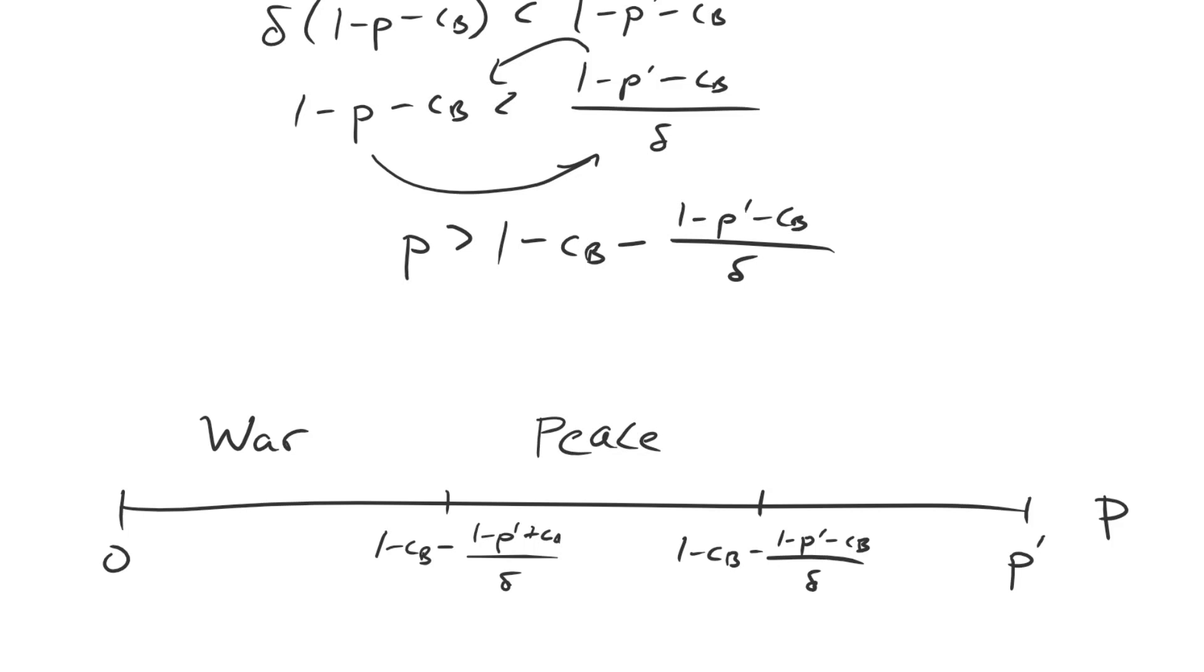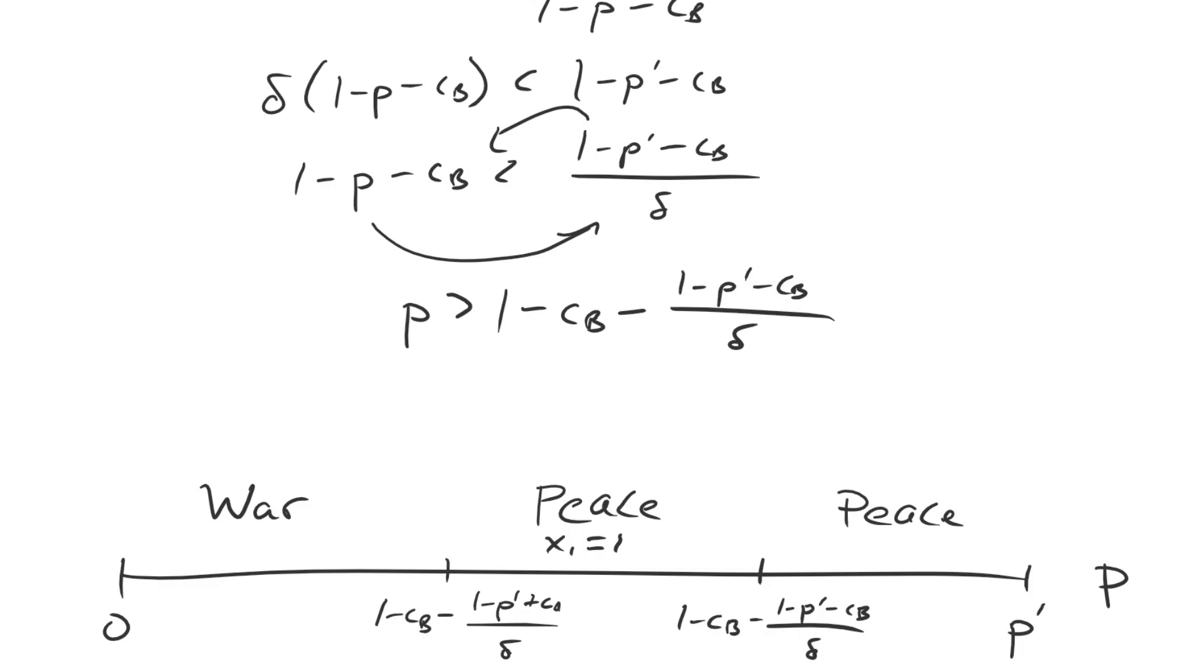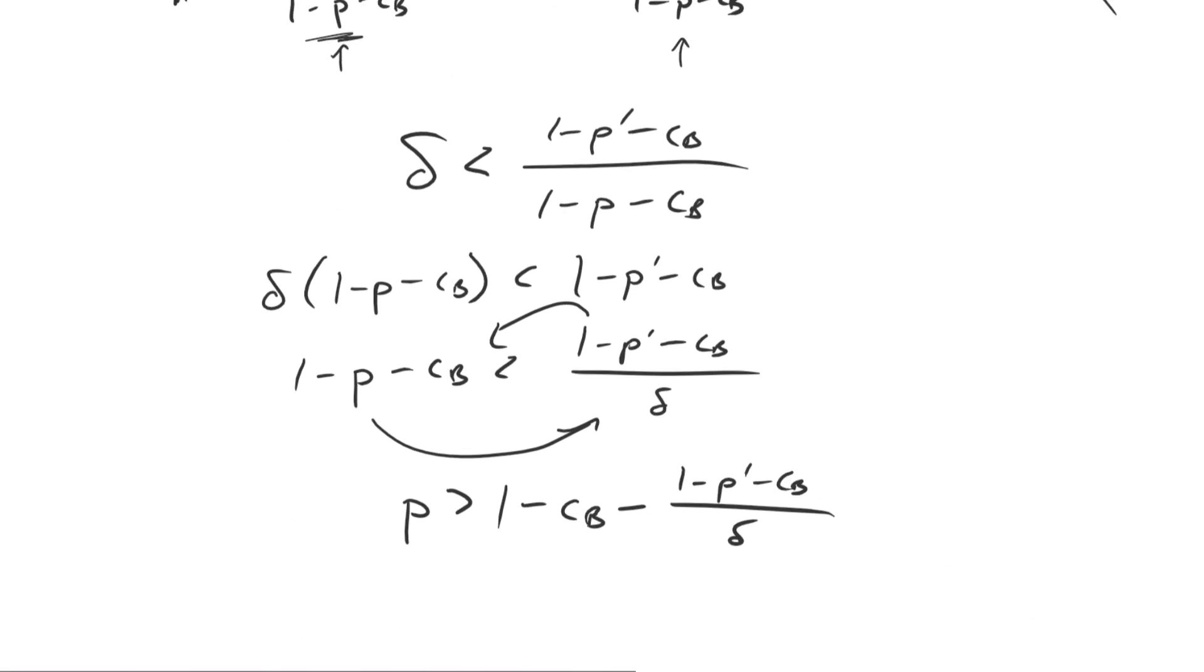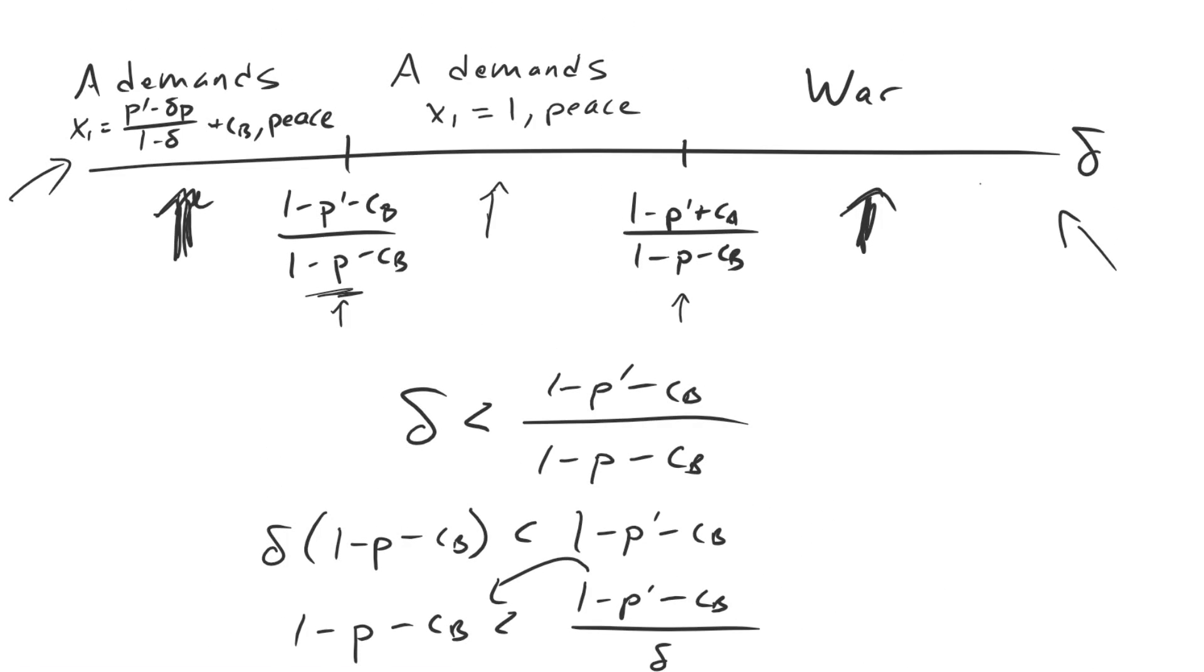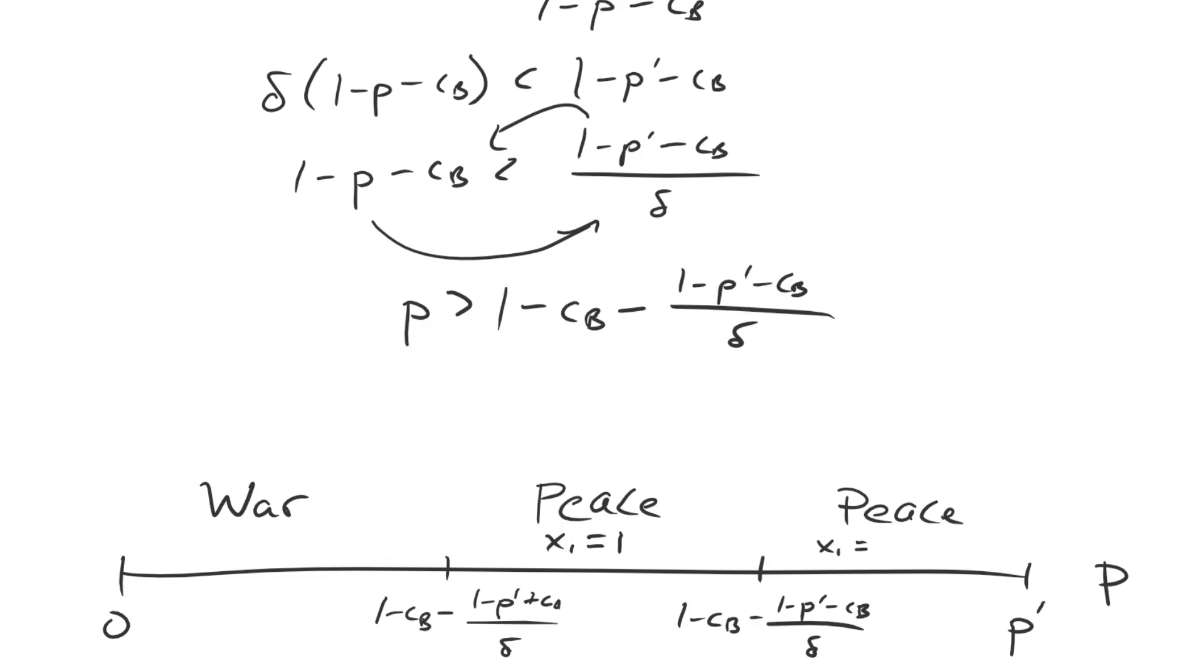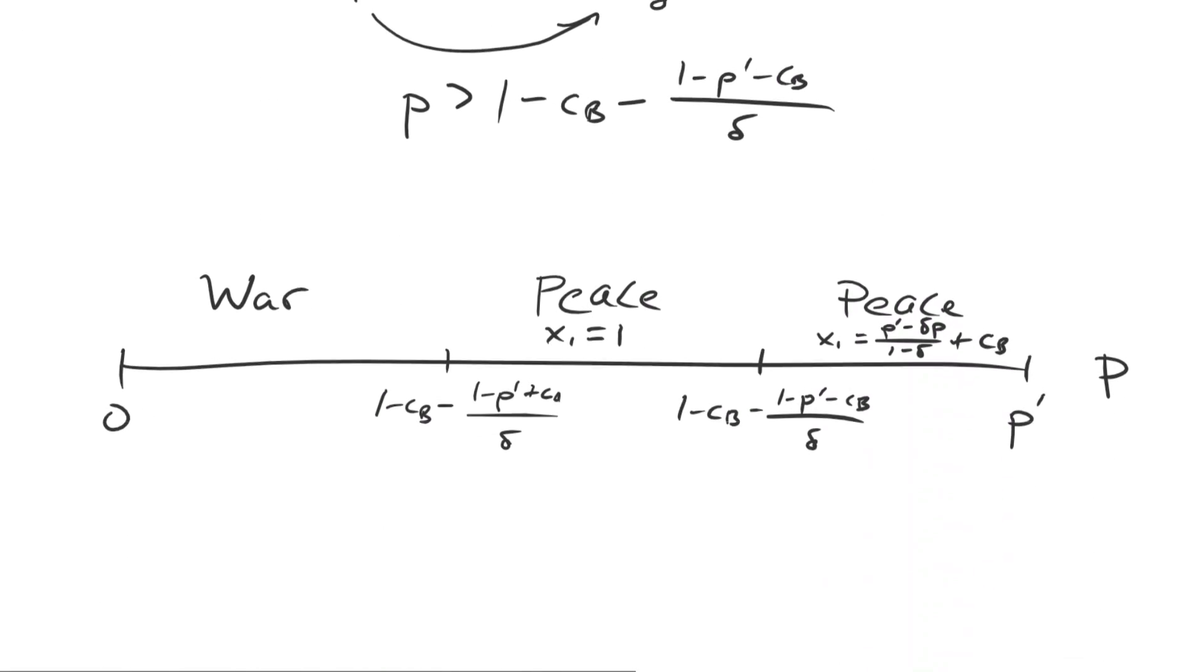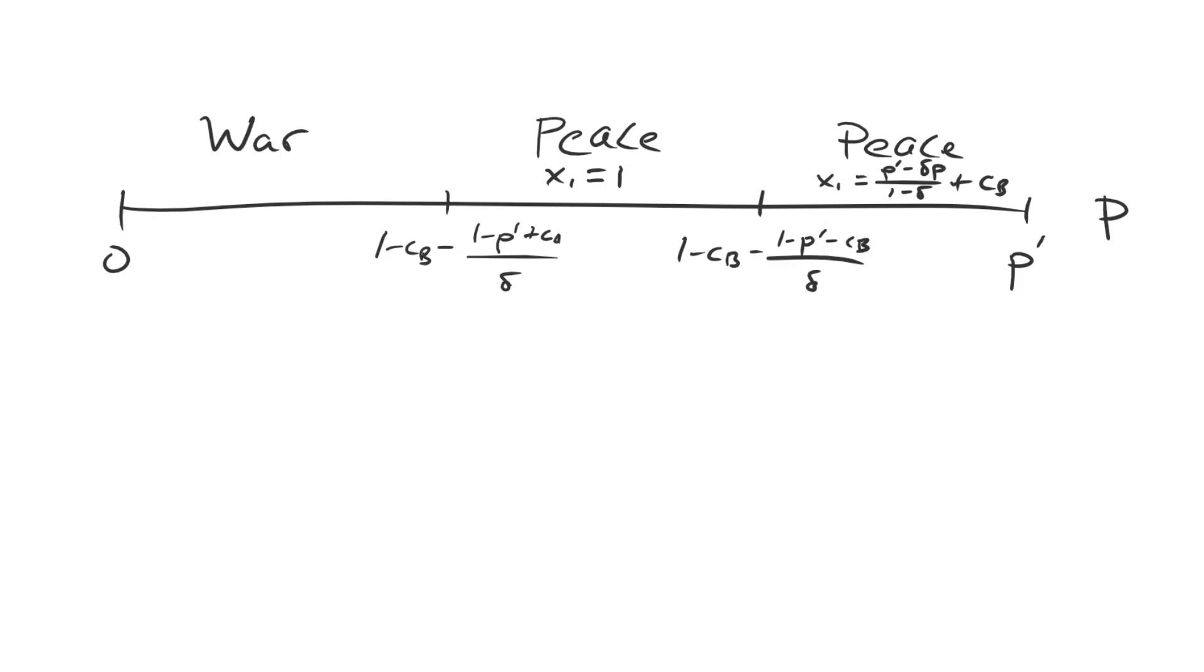And we have peace occurring here and here. The difference, of course, though, is that in this middle region, we have x_1 equaling 1. That's going to be important for calculating the expected utility for each of these parameter regions, which is the task for the next lecture. And here we have a more complicated value. It's p prime minus delta p divided by 1 minus delta plus c_b as x_1. Let's just go ahead and make sure that I'm doing this right. This is x_1 equal to p prime minus delta p divided by 1 minus delta plus c_b. Is that a plus? It is a plus. All right. So we are good. So we now have solved for the equilibrium of this game as a function of p. We know what's happening in the sub game where b has already made a decision about the balance of power in the future. And we know what's going to be playing out after that as a consequence of that decision.